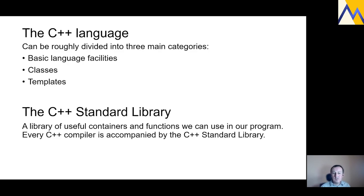The second topic is the C++ standard library. It is a library of useful containers and functions we can use in our program, declared in separate header files which we include in our program. When we want to compile a C++ program, we need a C++ compiler, and every compiler is accompanied by this C++ standard library.